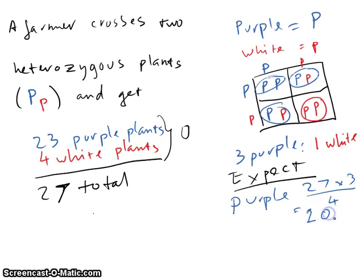20.25 purple plants. Well, that's kind of silly that you have 20.25 plants, but this is just a calculation. So who cares? So how many whites do I expect you to have here? So it's one-quarter of 27. So that would be 6.75.